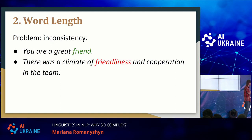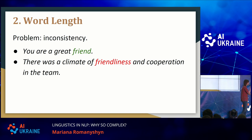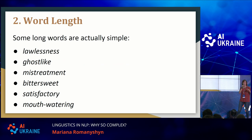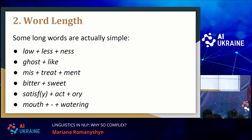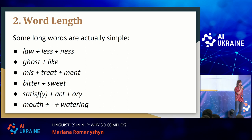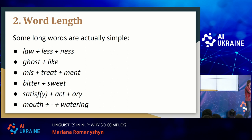Our second feature was word length, and it should be a pretty simple feature — just count the number of characters. But you will see that your model again works inconsistently because it would mark "friend" as simple and "friendliness" as complex. Yet any person who has learned the word "friend" would understand "friendliness," although it's longer and less frequent. It turns out that some long words are actually simple, because their formation came through a transparent and well-explained process.